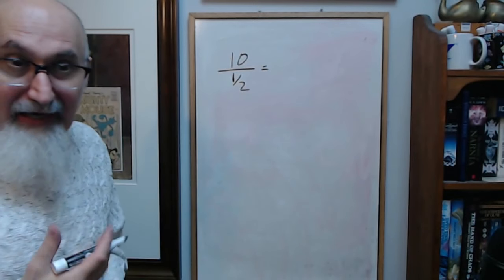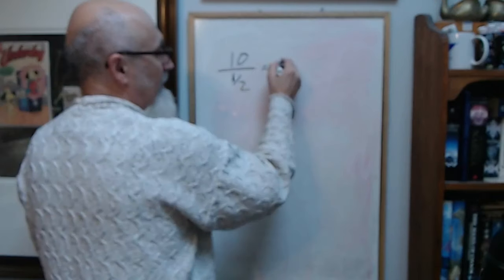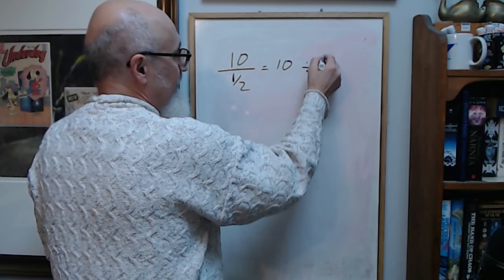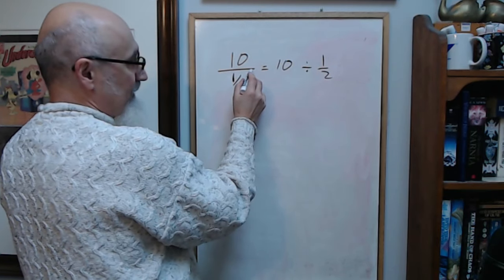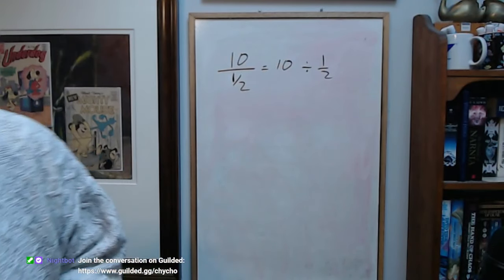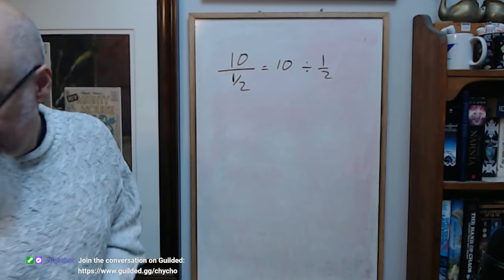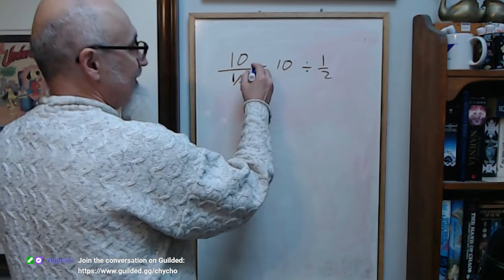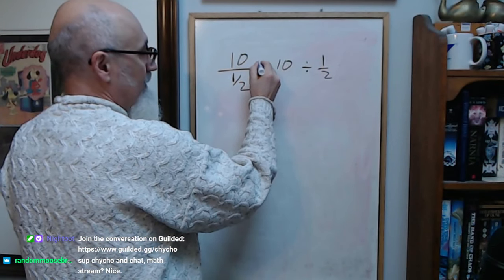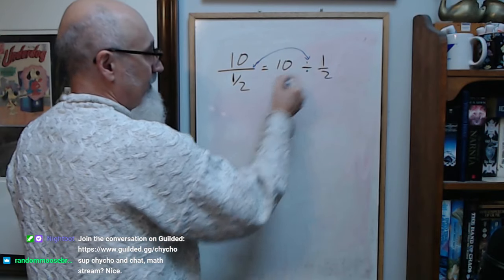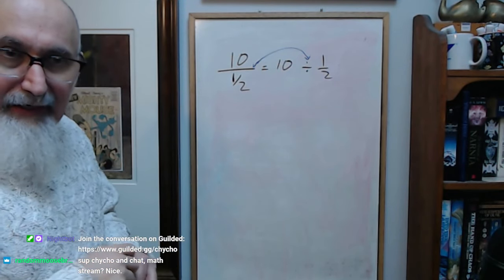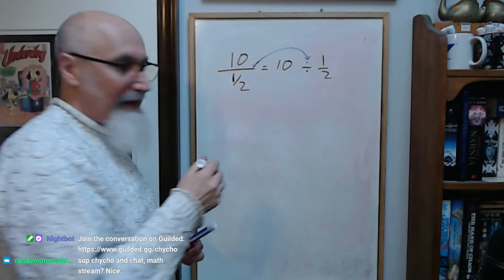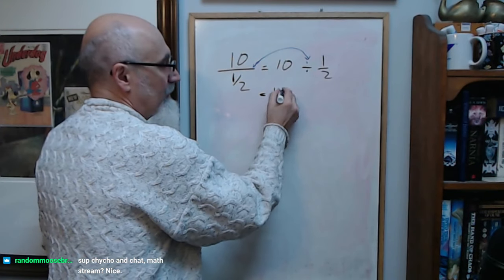Whenever you get a fraction on top of a fraction, if you want to think about it, write it sideways. This is ten divided by a half. That's what this symbol here means. Let me use blue so it's not as bad to take off. This symbol here is really this guy here, divided by a half.